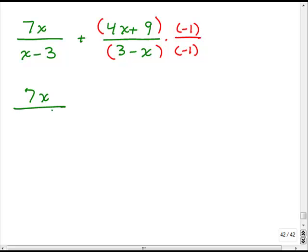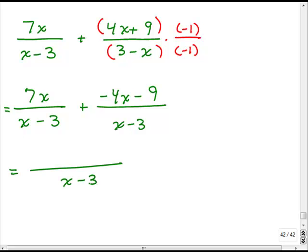So, this gives me 7x over x minus 3. And then, what's going to happen over here, I have to do negative 1 times what's in the parentheses. So, that's a negative 4x and a minus 9. And in the denominator, I'm going to have an x minus 3. When you multiply 3 minus x by negative 1, it's really a negative 3 plus x. I could write that as x minus 3. So, now, I have a common denominator of x minus 3, so I could add the numerators. All right.